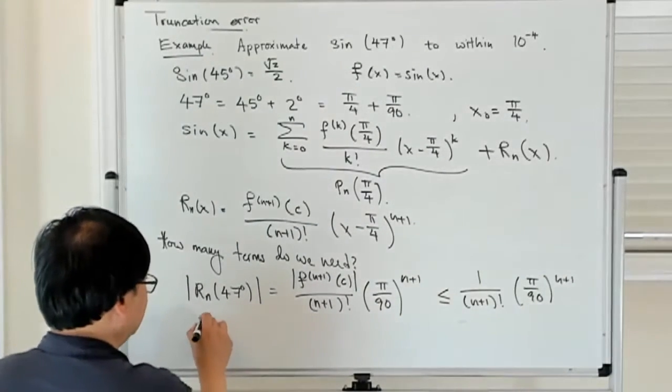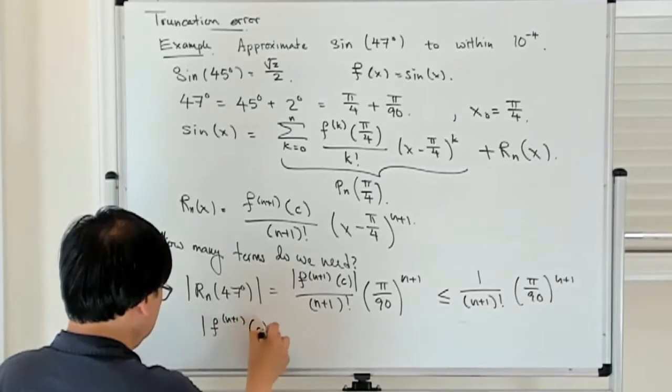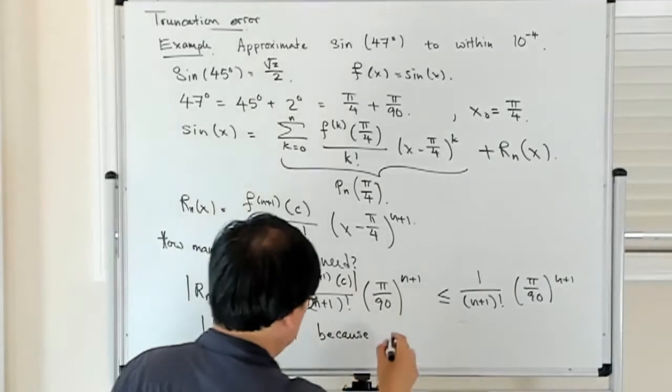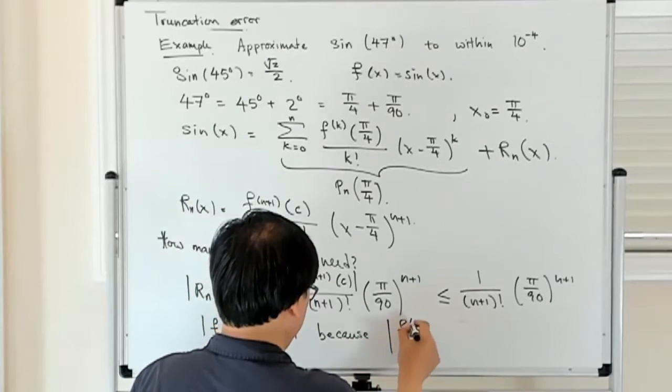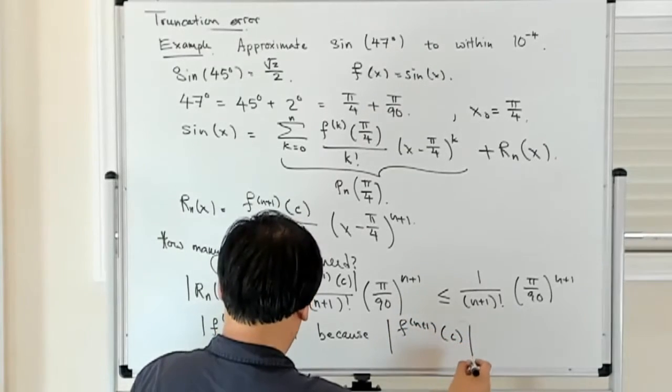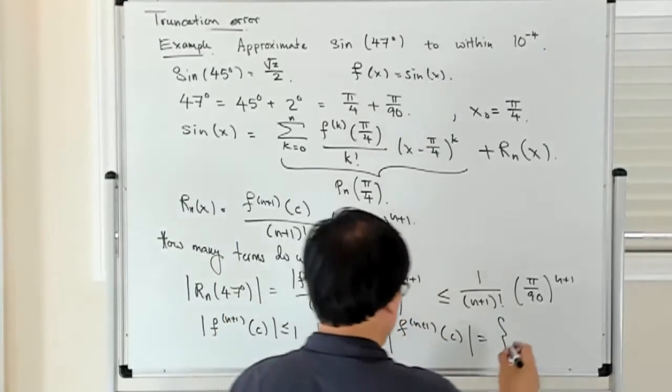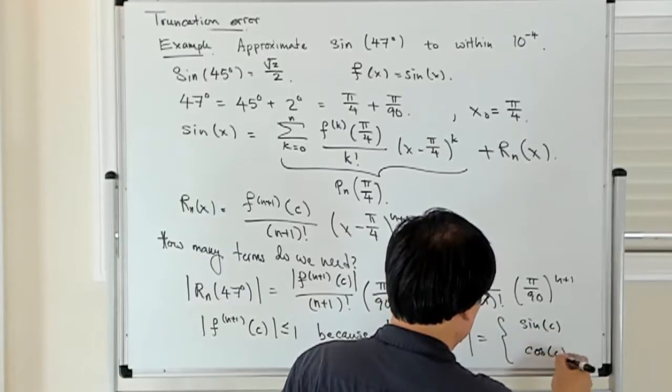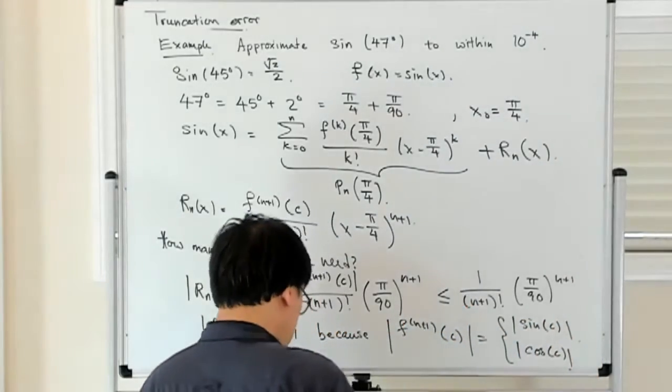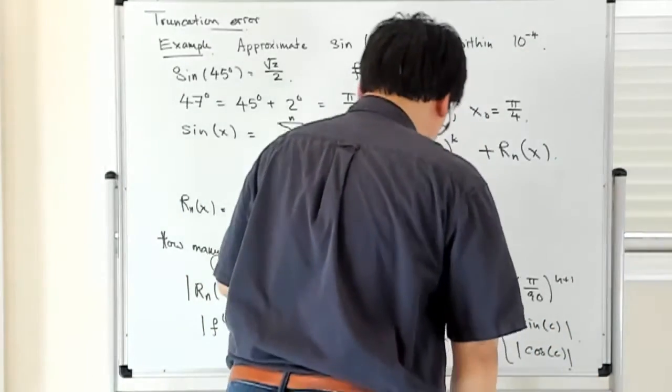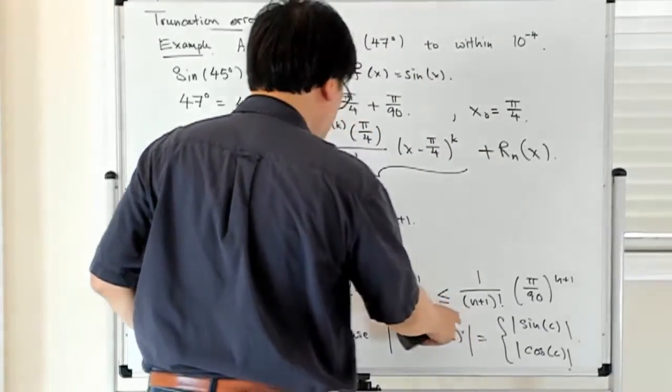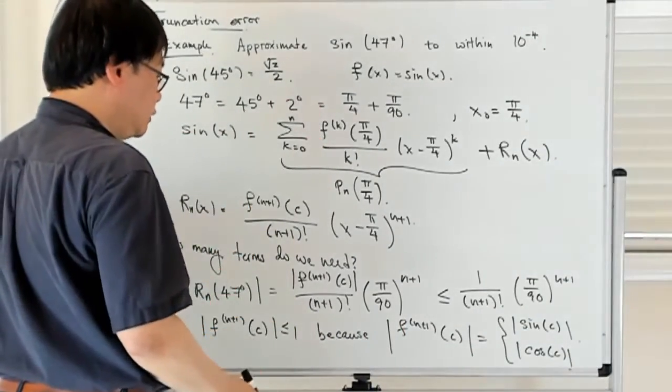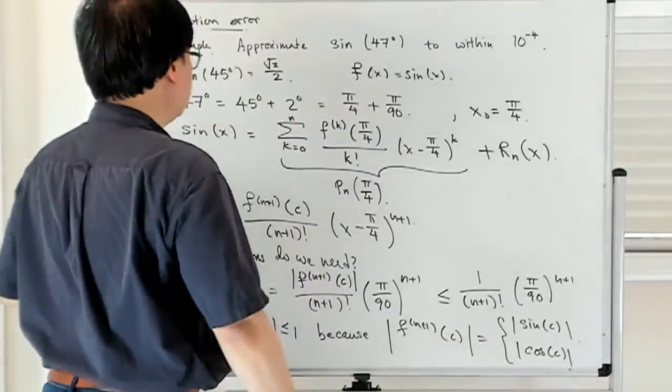And again, we know that f n plus 1 at c is less than or equal to 1, because the absolute value of f n plus 1 at c is either a sine or cosine in absolute value. So this is an upper bound to the error, and we want the error to be guaranteed to be less than 10 to the minus 4. I want this thing to be less than 10 to the minus 4.